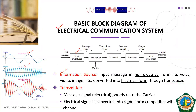We start with the input message, and as soon as we convert that message into electrical form, it becomes a signal. Whenever a message is present in electrical form, we call it a signal. So the first block is your information source converted into a message signal with the help of an input transducer.